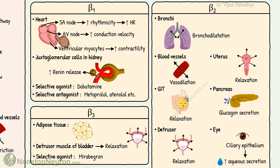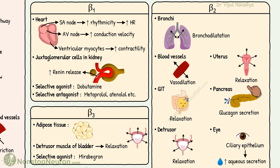Beta-1 receptors are involved in the stimulation of heart activity and the release of renin from JG cells in the kidney. Beta-2 receptors cause bronchodilation, vasodilation, uterine relaxation, relaxation of the digestive tract, detrusor relaxation, and increased aqueous secretion.